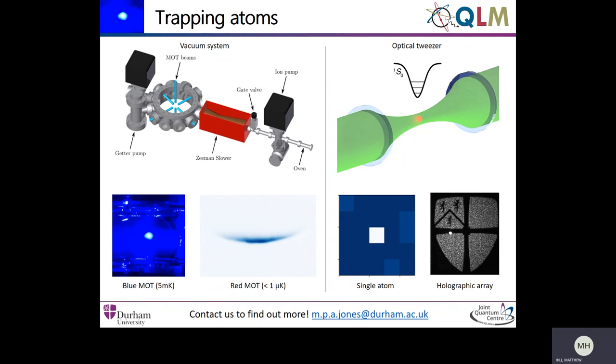Here we have a single atom image showing one atom in a single tweezer on a single pixel of our photon counter. But using a device called a spatial light modulator we can create holograms that give us 3D arbitrary trap arrays where here we show an example of a 2D image of the Durham University logo. But with an arbitrary 3D array of single atoms there's a wealth of physics that you can do with that.